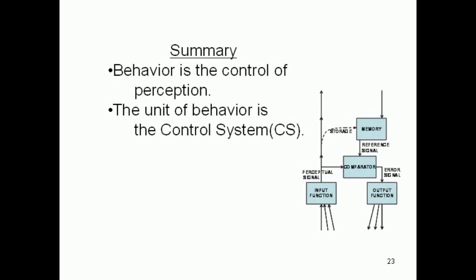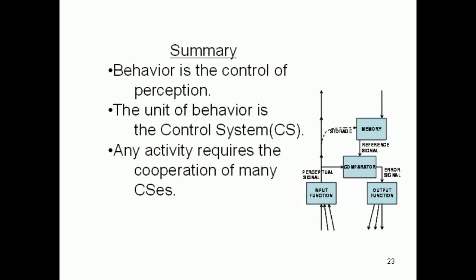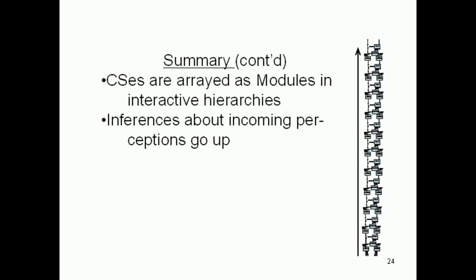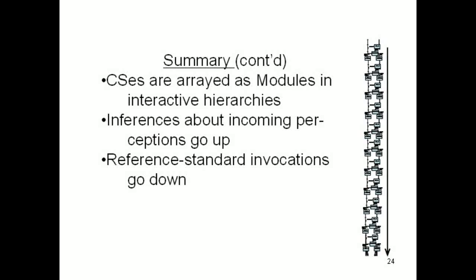To summarize our presentation of PCT so far: behavior in general can be understood as the control of perception. The unit of behavior is the control system, and even the simplest activity requires the cooperative interaction of an inordinate number of CSs. CSs are indeed the individual bricks of behavioral castles. CSs are arrayed as modules in interactive hierarchies. Each module passes its inferences about the world outside the CS realm to the next higher level in the form of perceptual signals. To control its incoming perceptions, each CS module uses lower-level modules by invoking reference standards for them to control their perceptions too. This hierarchy provides behavioral reference standards for the entire range of human activity.